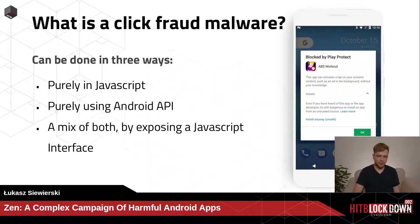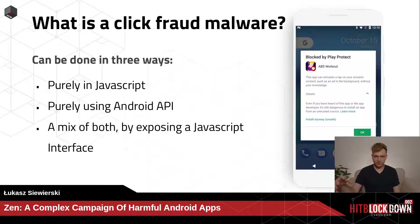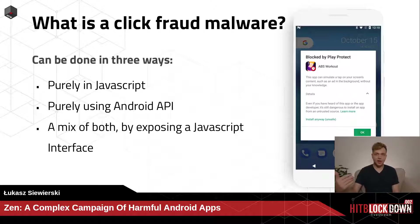The mix approach uses a JavaScript interface — a way for a website to use JavaScript to call a Java method implemented in the app. The app exposes a JavaScript interface, the JavaScript code calls a method exposed through it, and then Java code is executed on Android. That Java code can, for example, simulate a click on an ad. The attacker gets information from the website and based on that information clicks on an ad.